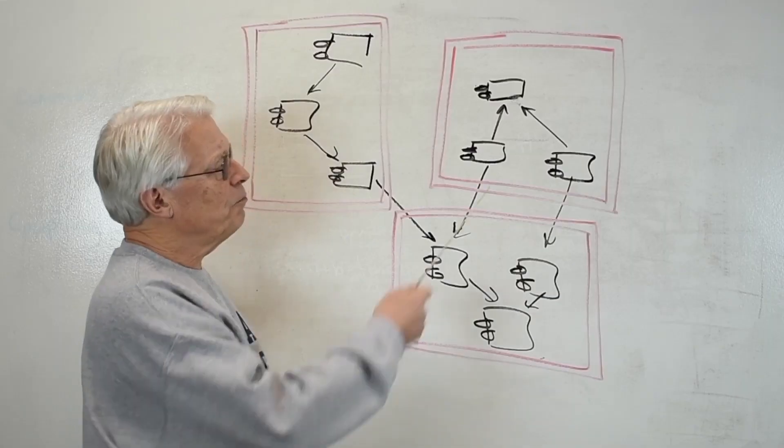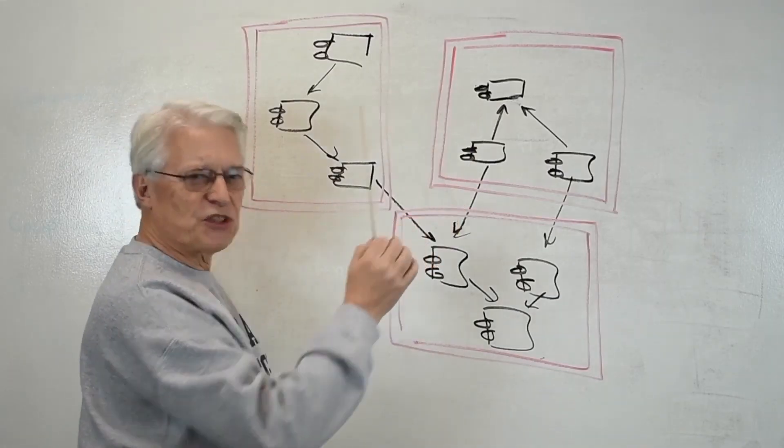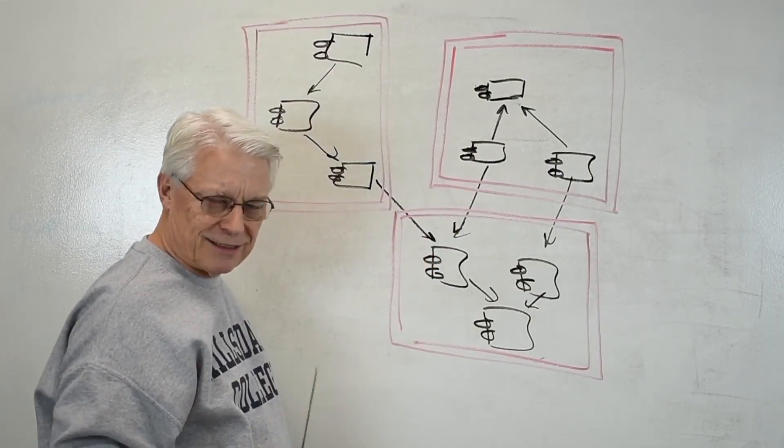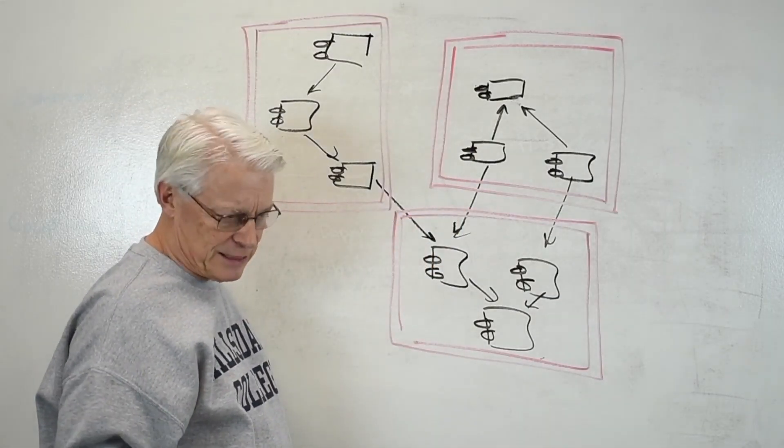The decision to use a statically linked monolith or a dynamically loaded set of libraries can be deferred. Components are smaller than architectural elements. There is no correct release order. There is no correct deployment order. And order matters.